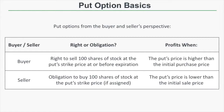Now let's look at put options from the buyer and seller's perspective. From the buyer's perspective, a put option represents the right to sell 100 shares of stock at the put strike price at or before expiration. A put buyer profits when the put value increases above what they purchased it for. So if someone buys a put option for $10 and it rises to $12, that represents a $200 profit — they bought it for $1,000 and it rose to $1,200.